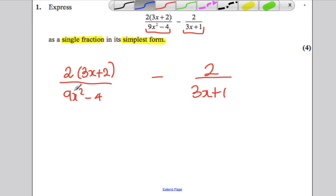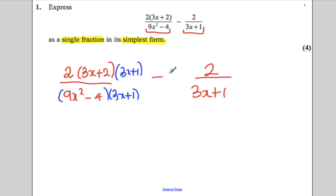What they say is, well, to subtract fractions you need a common denominator, so this one needs to be multiplied by 3x plus 1, and this one needs to be multiplied by 9x squared minus 4.